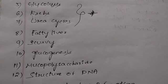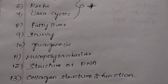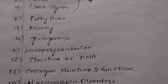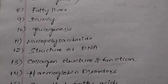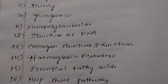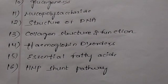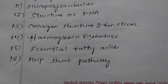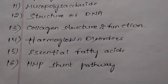Mucopolysaccharides and structure of DNA - this is Watson-Crick model of DNA structure. Collagen structure and function. Hemoglobin disorders. Essential fatty acids - it's a most important question. HMP shunt pathway. These are very, very important questions.